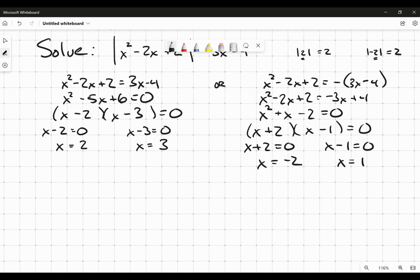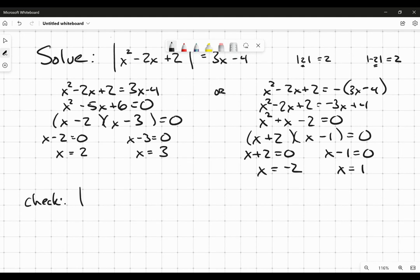Now we want to check. It's the absolute value of 2 squared minus 2 times 2 plus 2. Does that equal 3 times 2 minus 4? This is 4 minus 4, so it's the absolute value of 2 equals 6 minus 4, which is 2. Yes, that works.